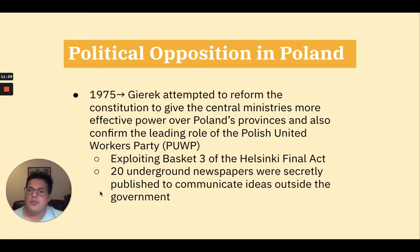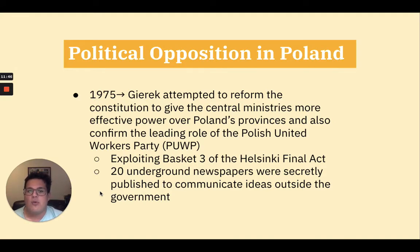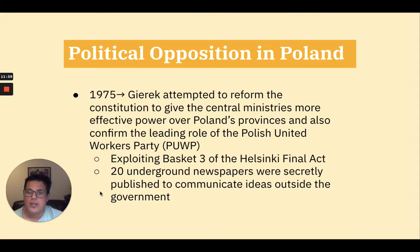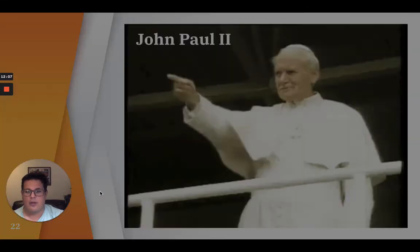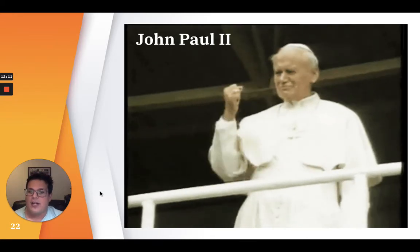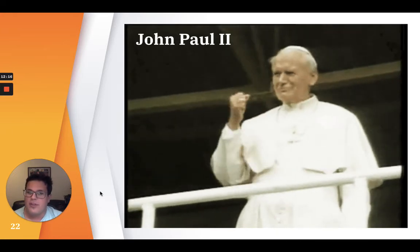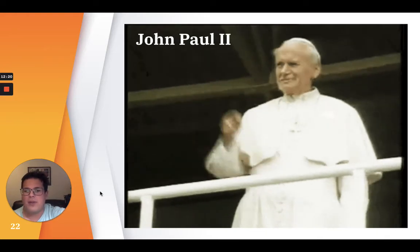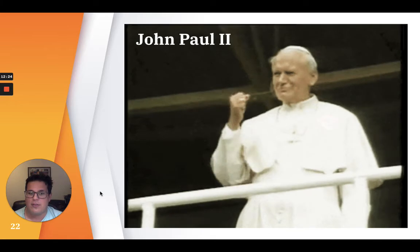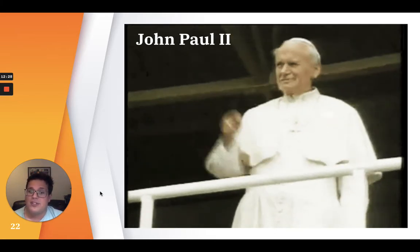In 1975, Gierek attempted to reform the constitution to give central ministries more power over Poland's provinces and confirm the leading role of the Polish United Workers' Party, or PUWP. This was seen as an effort to tighten the party's grip on Poland and led to a new wave of opposition. Exploiting Basket 3 of the Helsinki Final Act, groups dedicated to the defense of human rights were established. Around 20 underground newspapers were secretly published and circulated outside government channels. In May 1979, the newly installed Roman Catholic Pope, John Paul II, who was from Poland, visited his home country. Huge crowds greeted him, and his popularity in the face of a theoretically atheist government demonstrated further disconnection between Poland's citizens and the USSR.